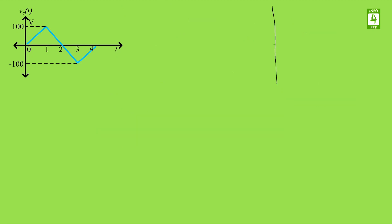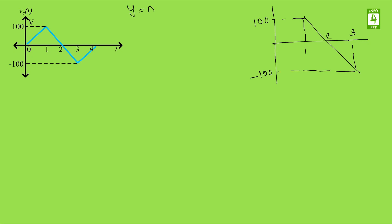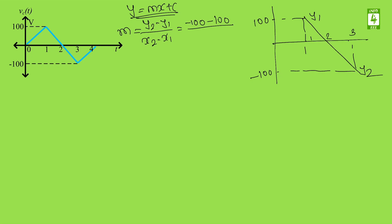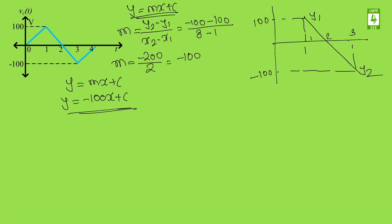For the second equation we consider this line, which is between 1 to 3. This magnitude is 100 and this magnitude is minus 100. Using y = mx + c, the slope m = (y2 - y1) / (x2 - x1) = (-100 - 100) / (3 - 1), which gives slope = -200/2 = -100. So the equation becomes y = -100x + c, where c is the y-intercept.